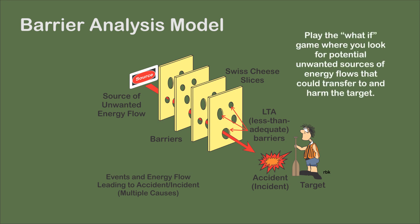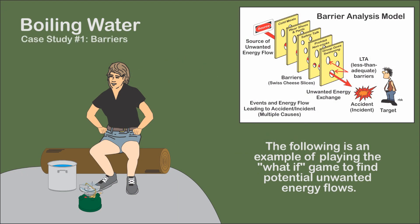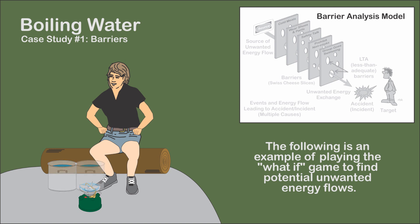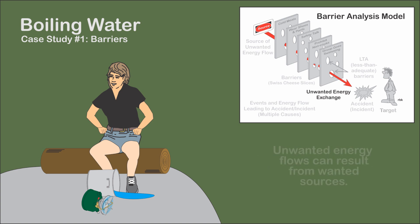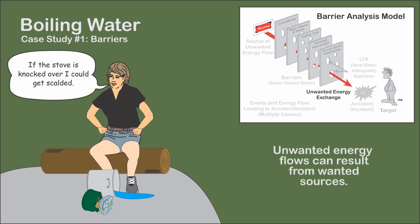Quite simply, your strategy is to play the what-if game, where you look for potential unwanted sources of energy flows that could transfer to and harm the target. For example, you have an outdoor kitchen where the cook is boiling water on a gas stove for dinner. The stove is a source of a wanted energy transfer which results in boiling the water. Playing the what-if game, you ask: what if the boiling water spills and burns the cook? This wanted energy transfer can quickly become an unwanted energy flow to the target — the cook — resulting in injury, damage, or loss.